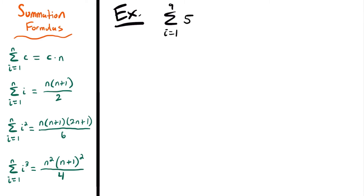Welcome back. Let's start with this example. We have the sum from i equals 1 to 9 of 5. How would we go about finding the answer to this summation? If we look at our summation formulas, we have four different formulas that we're going to want to know as we go through different examples. Our example problem lines up with our first rule: when we have the sum starting at 1 to some upper bound n of a constant c, that will be equal to c times n, our upper bound.